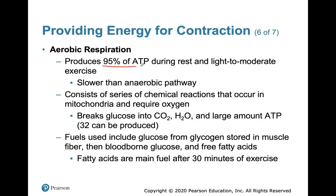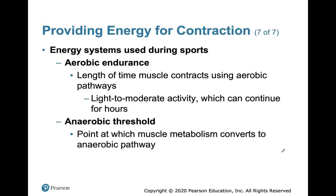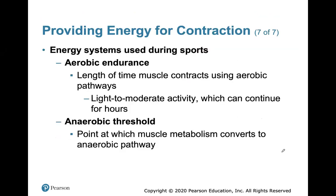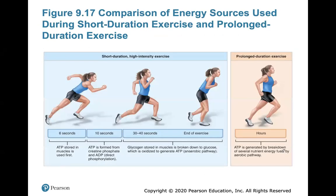Aerobic respiration, in the presence of oxygen, produces the most ATP. It's slower than the anaerobic pathway and consists of a series of chemical reactions occurring in the mitochondria requiring oxygen. We can create up to 32 ATP from one glucose molecule. After about 30 minutes of exercise, we can also use other fuels like fatty acids to create ATP.